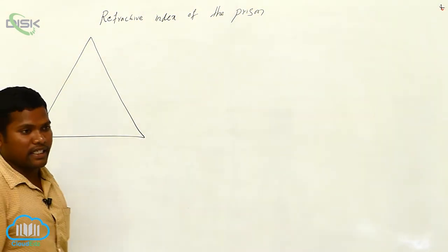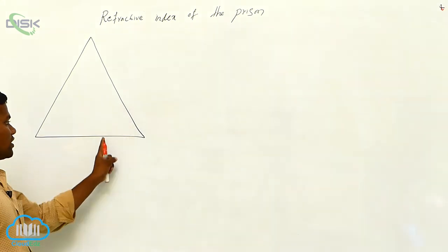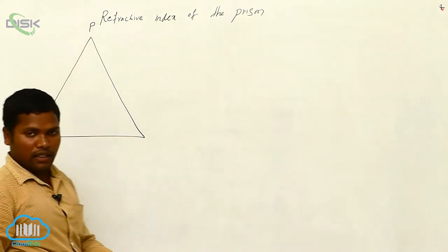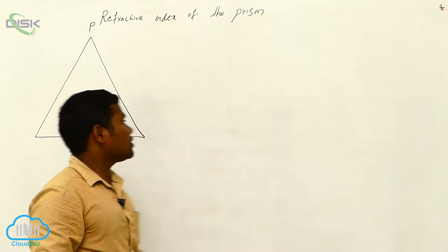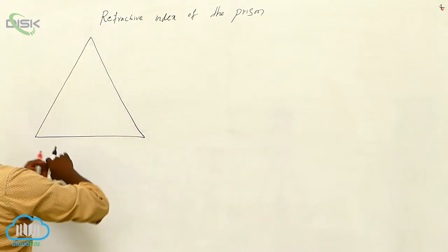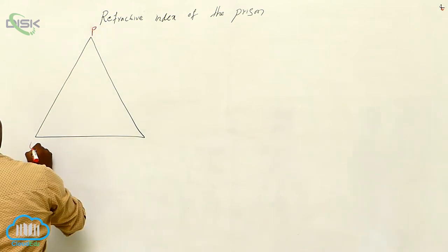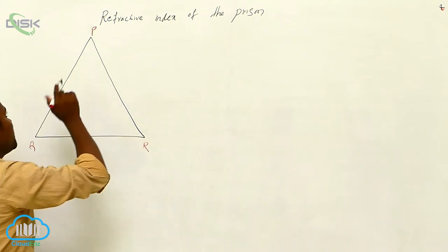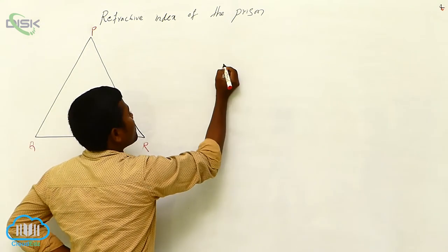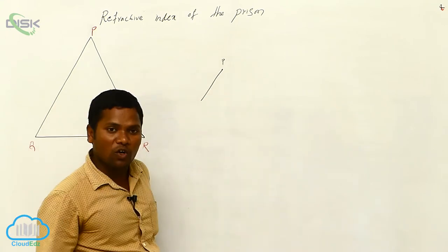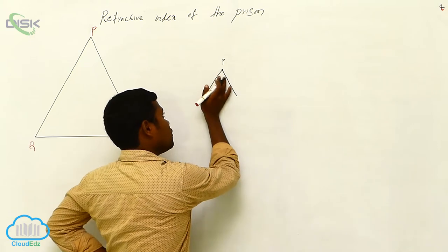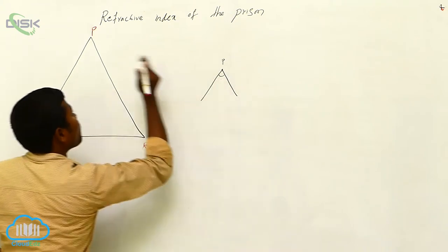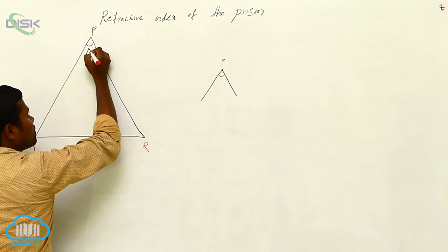Now I am drawing the prism diagram. The prism is a triangle shape, and all sides are equal — this is one side, this is another side, this is another side. Now I am going to give the name of the prism. This triangle or prism is named PQR — P, Q, R. This is one side, this is another side. Now let us take point P — is there any angle? I am drawing another line. Is there any angle between these two lines?